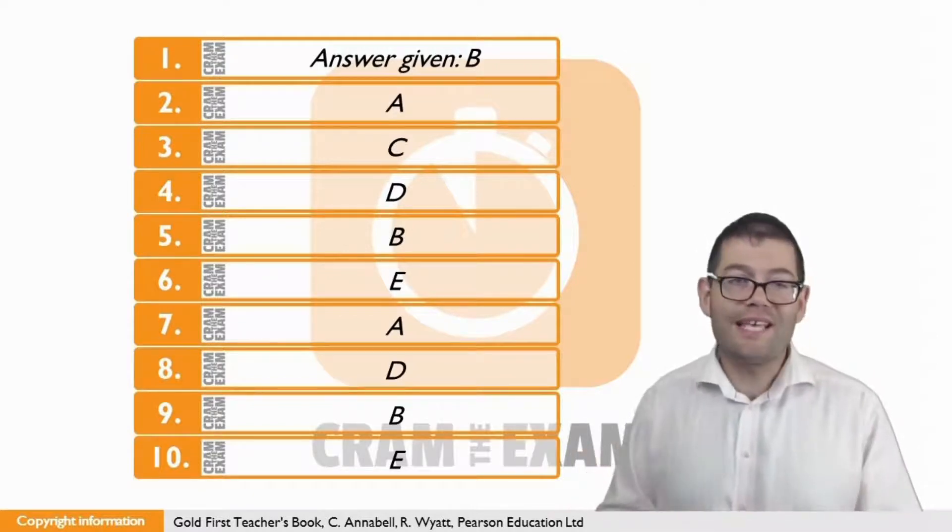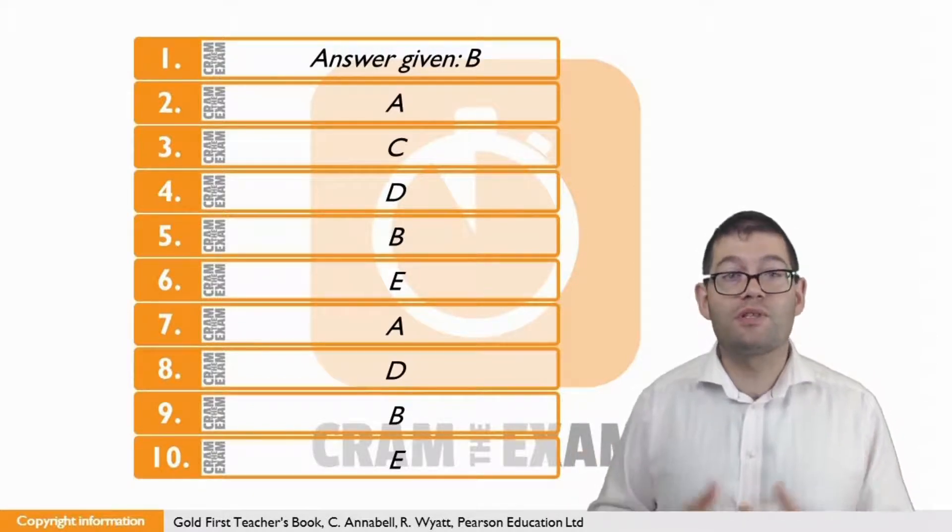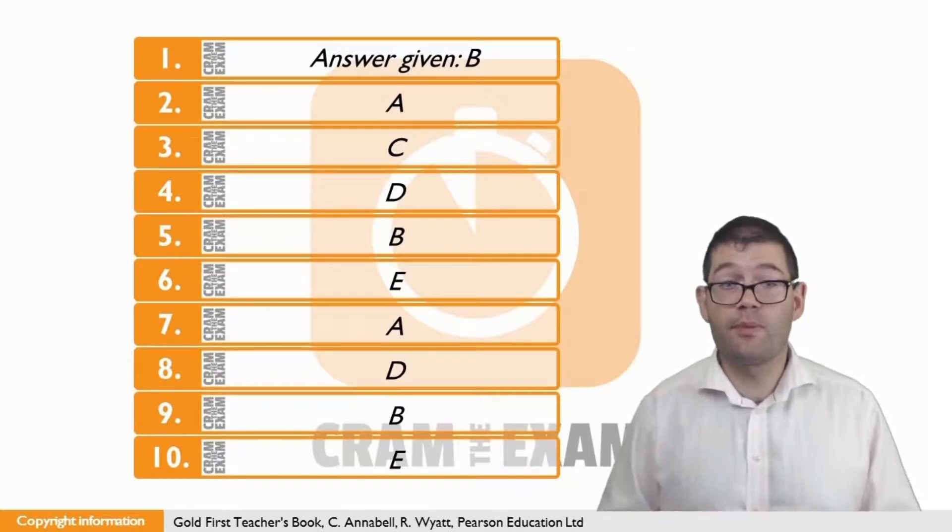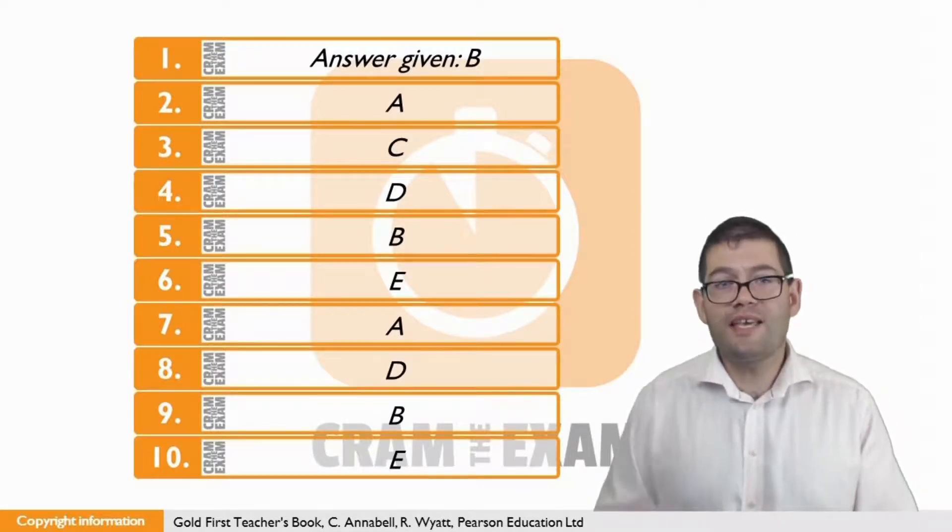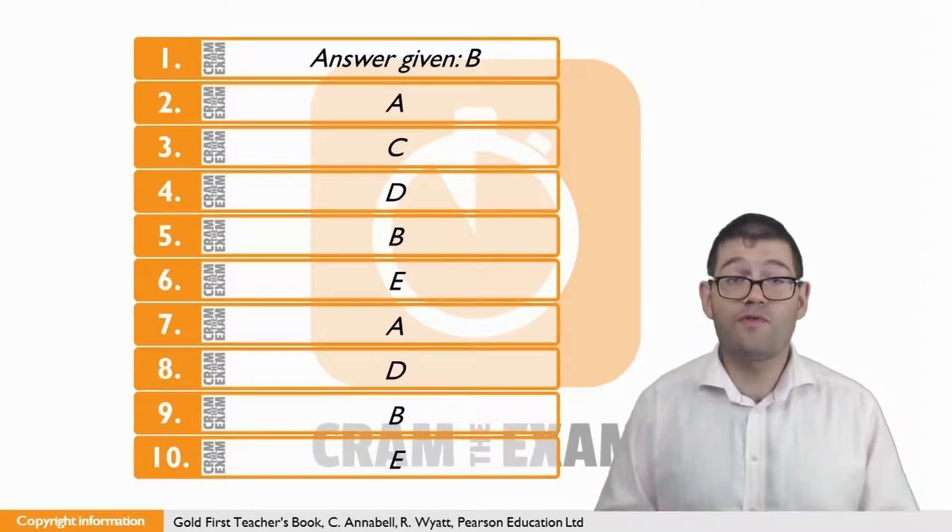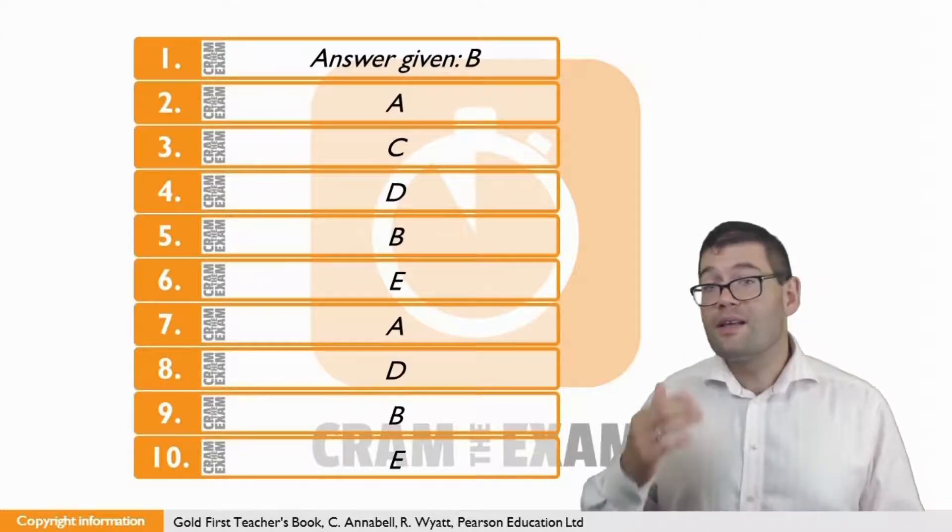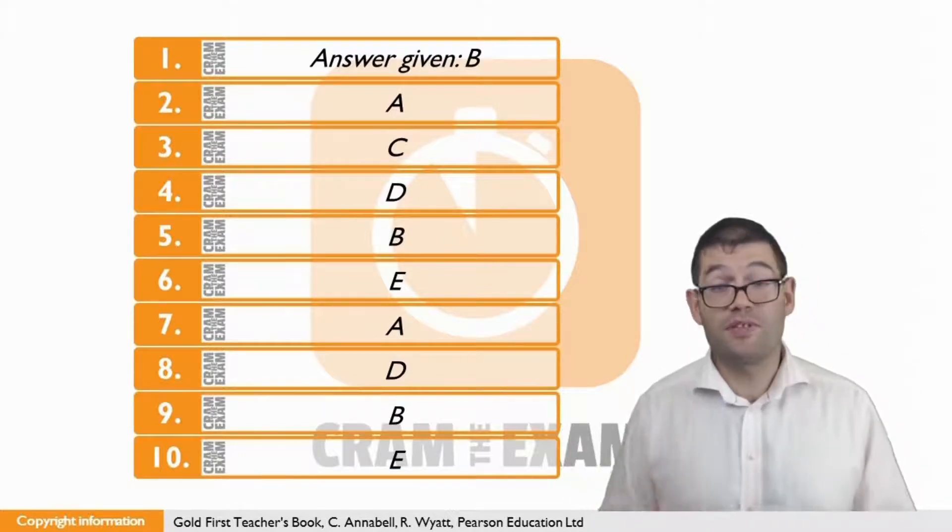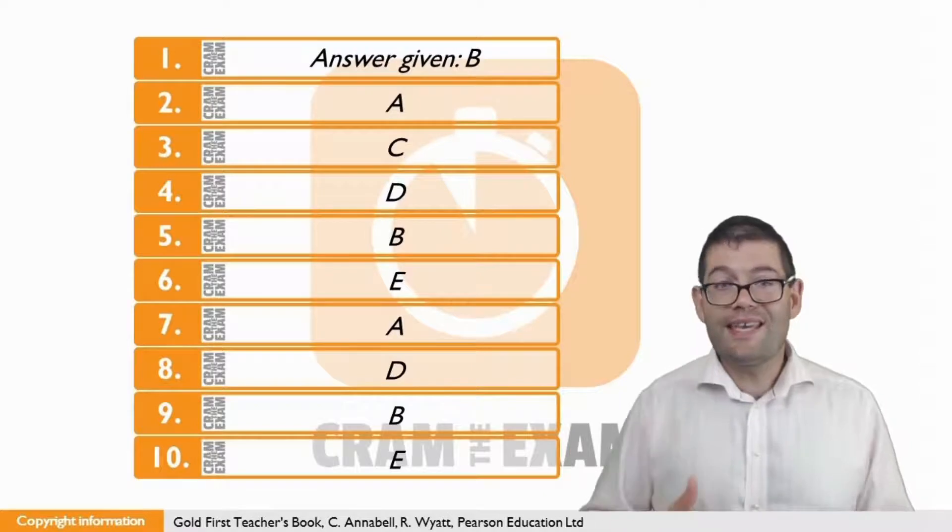For question seven, the answer is A. Emma regularly travels long distances to do a specific job. This one is difficult to get as we have to match three different sets of vocabulary: regularly, long distances, and specific job. The answer here is A.